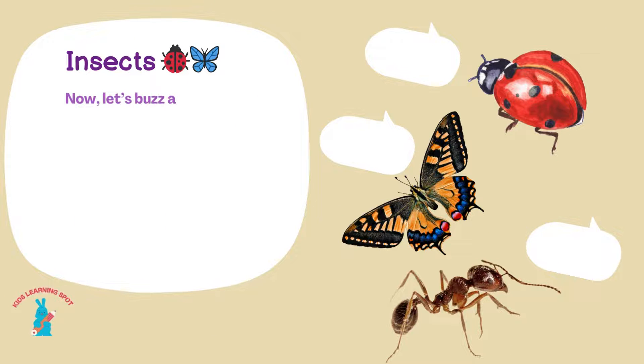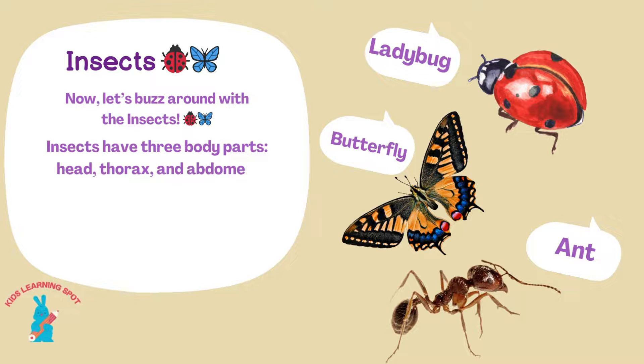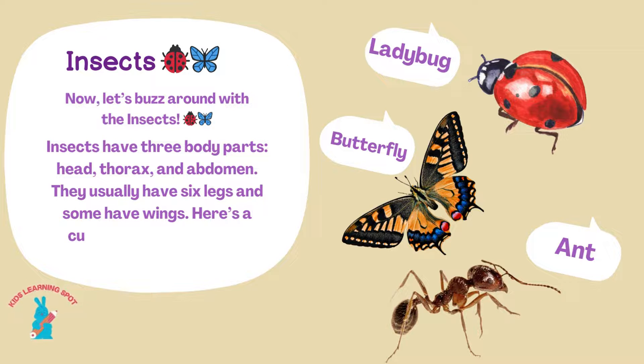Now let's buzz around with the insects. Insects have three body parts: head, thorax, and abdomen. They usually have six legs and some have wings. Here's a cute ladybug, a beautiful butterfly, and a busy ant.